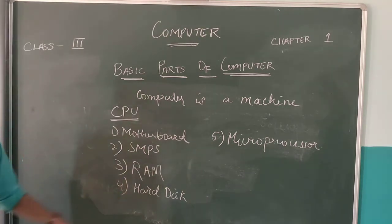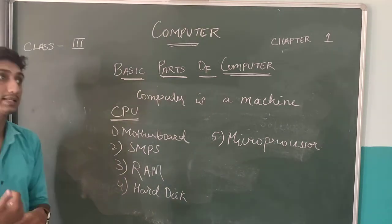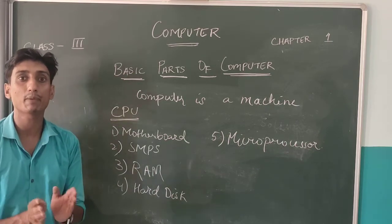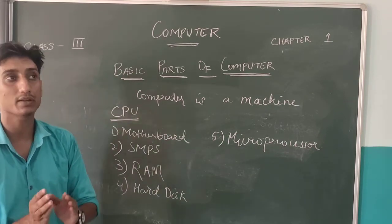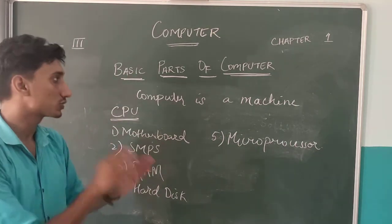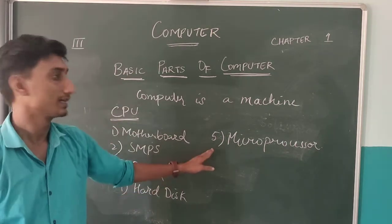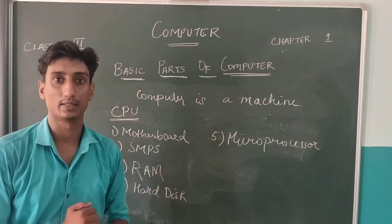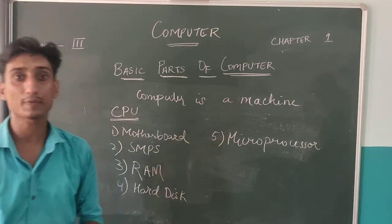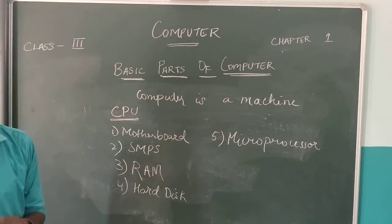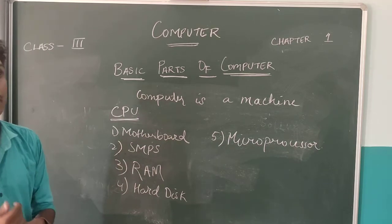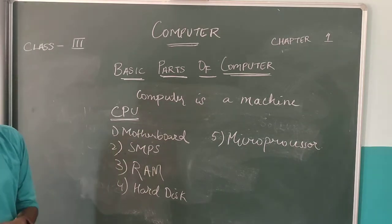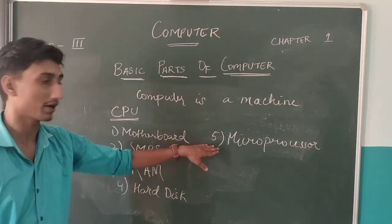Hard disk is a storage system where all your data is stored. Then microprocessor — microprocessor is known as the brain of the computer, which means it can perform all processing operations.